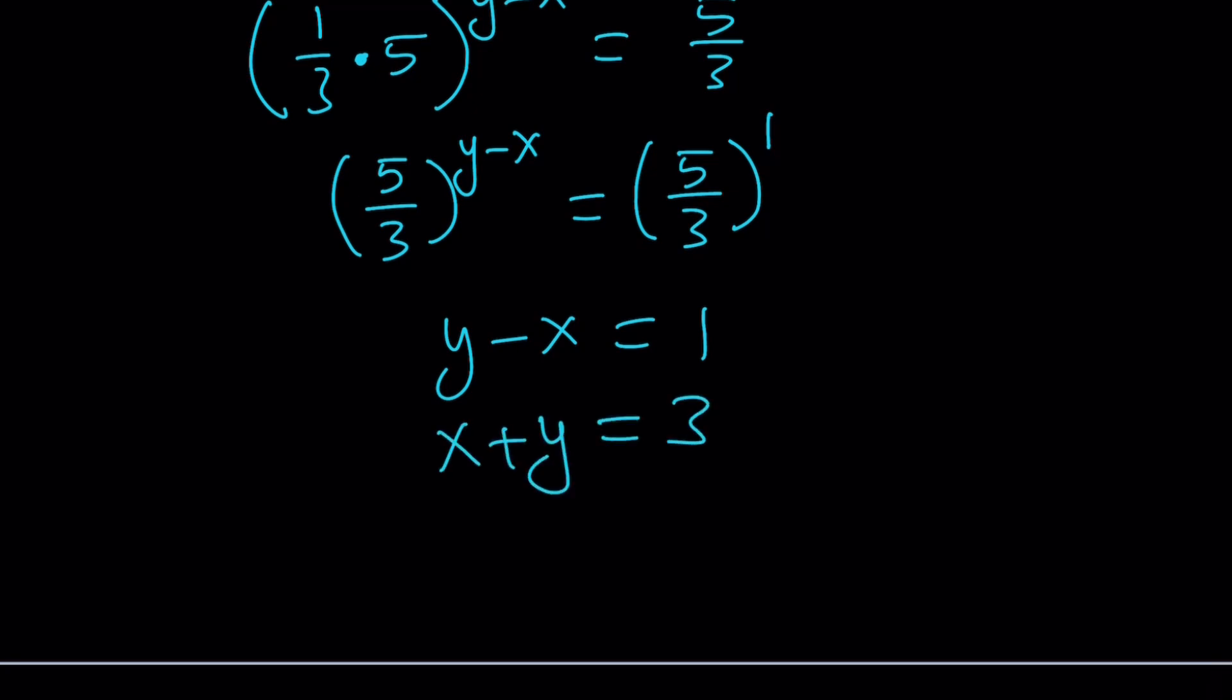Now I got another equation, and this becomes a system. This system is very easy to solve. Just add them up. X cancels out. You get 2y equals 4, which means y is equal to 2. And x is equal to 1 because their sum is 3 or their difference is 1.